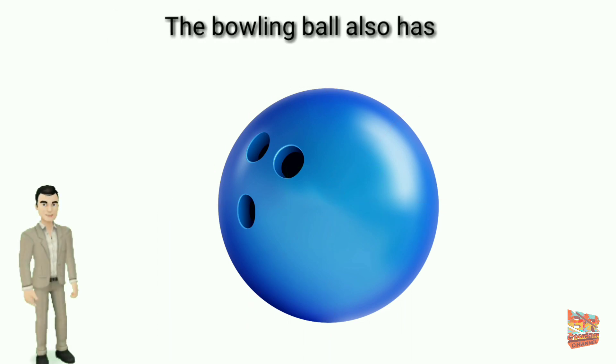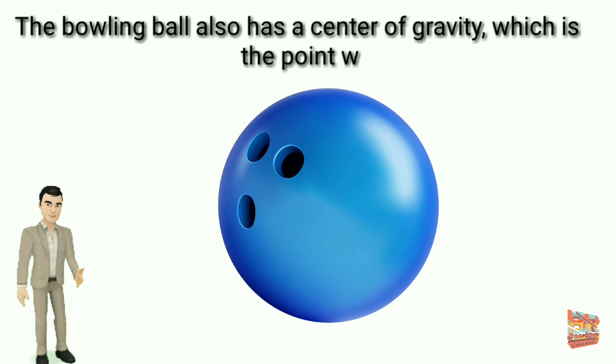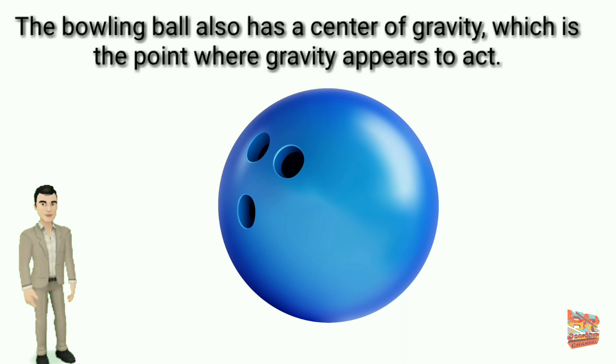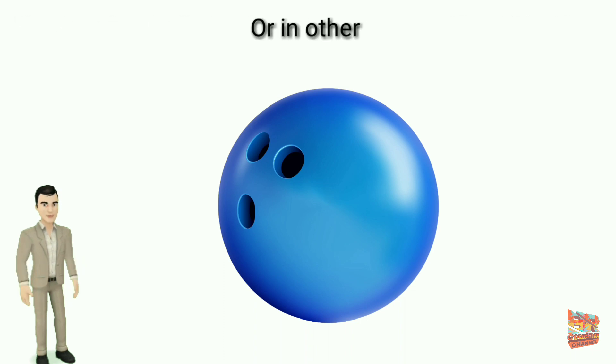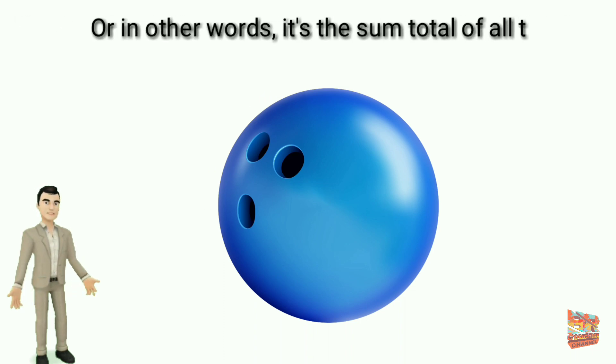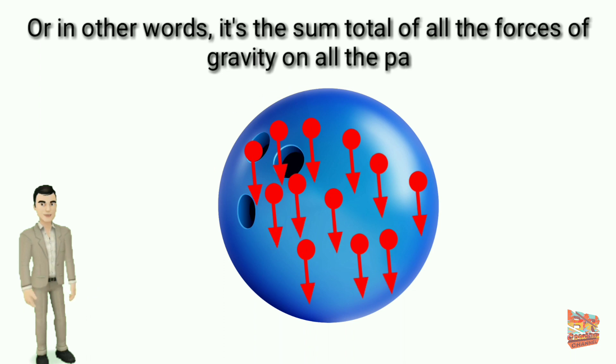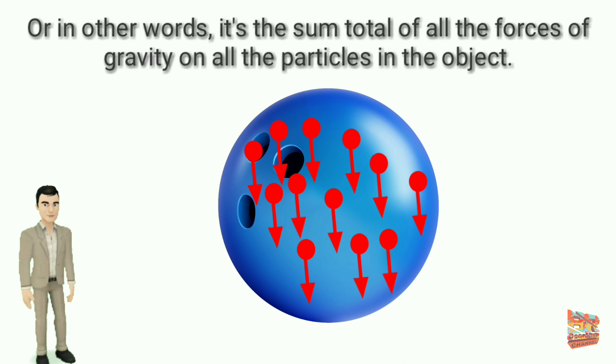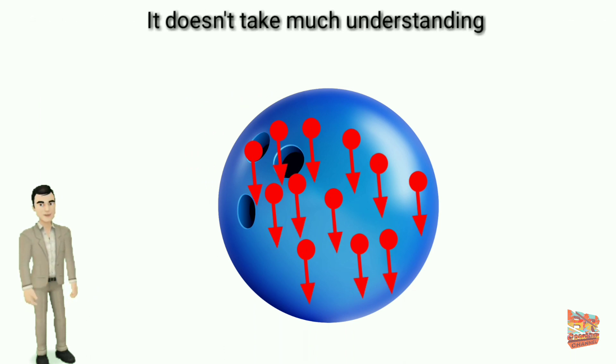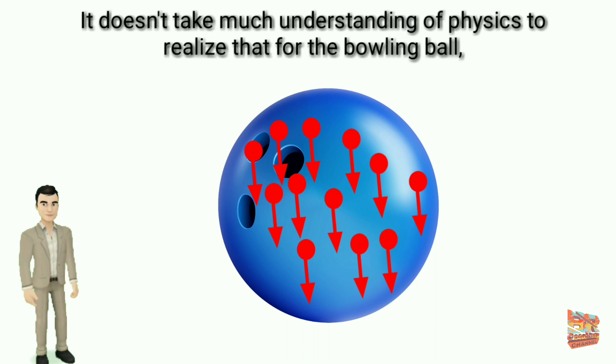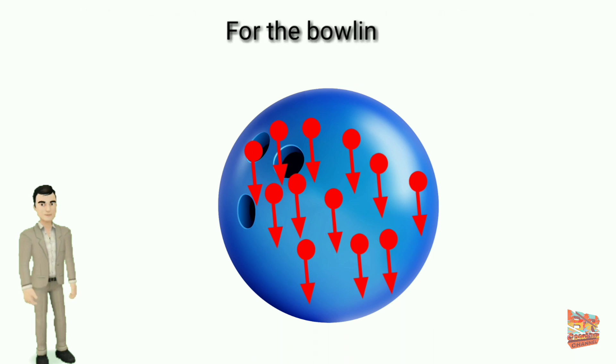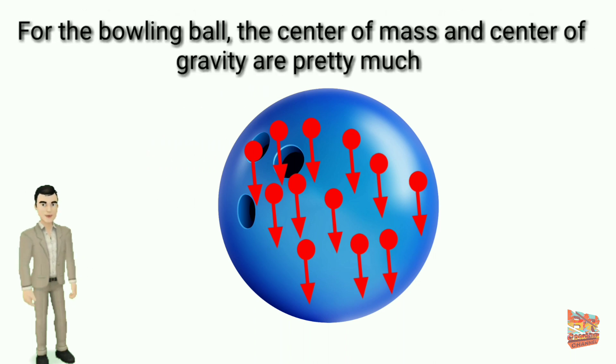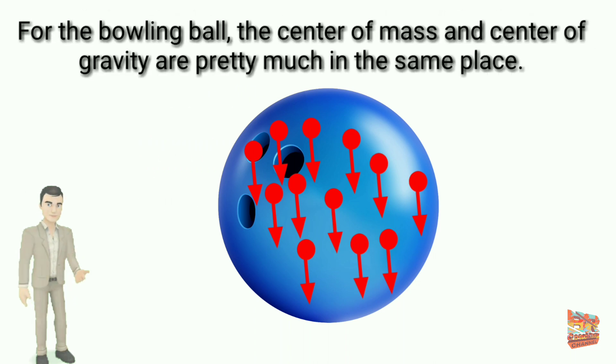The bowling ball also has a center of gravity, which is the point where gravity appears to act. In other words, it's the sum total of all the forces of gravity on all the particles in the object. It doesn't take much understanding of physics to realize that for the bowling ball, this is also at the very center of the object. For the bowling ball, the center of mass and center of gravity are pretty much in the same place.